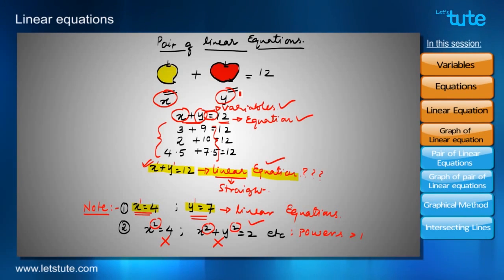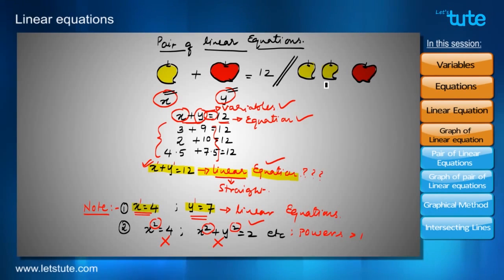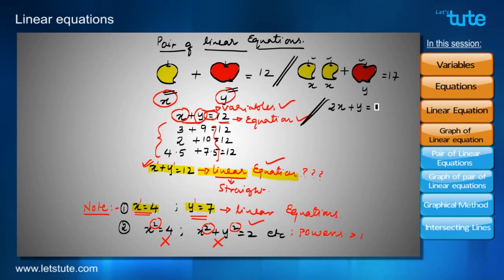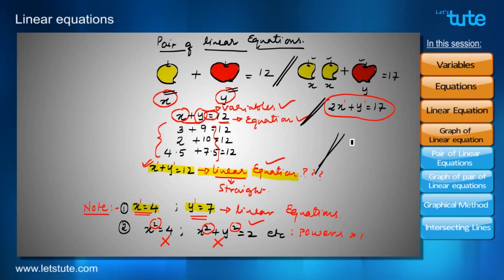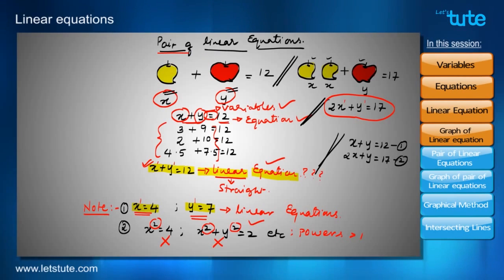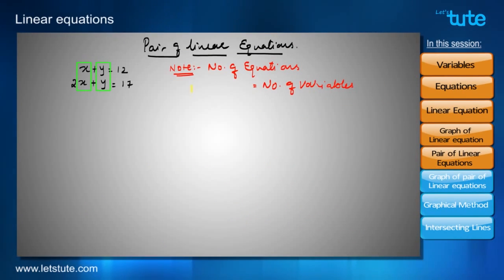To find the individual prices, I sent my brother to the same shop — he bought two mangoes and one apple for 17 rupees. Using our earlier assumption of X for mango and Y for apple, we write this as 2X plus Y equals 17. Since powers of variables are 1, this is another linear equation. Now we are dealing with two linear equations — X plus Y equals 12 and 2X plus Y equals 17 — which is called a pair of linear equations.